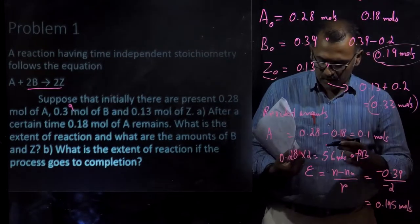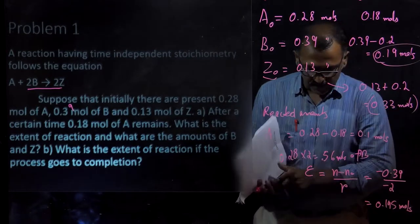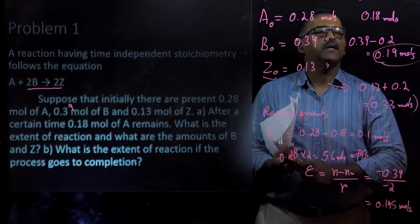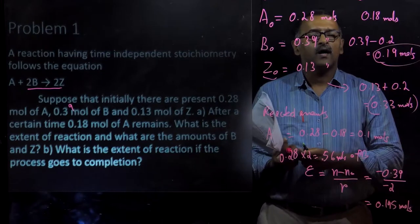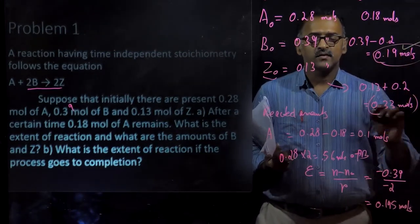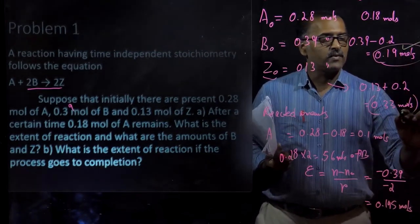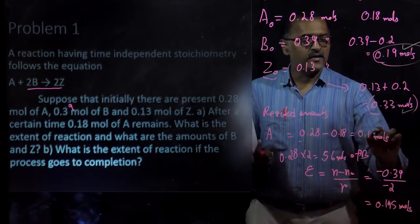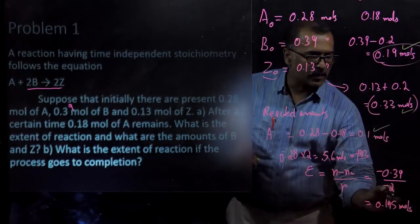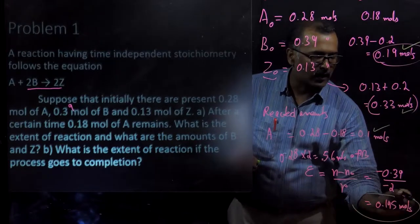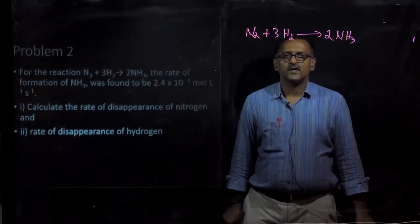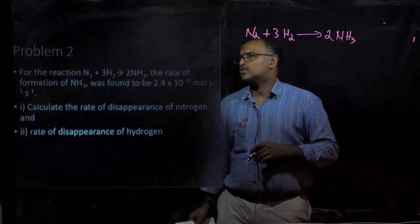So our answers are: B remaining = 0.19 moles, C = 0.33 moles, A remaining = 0.1 moles, and the extent of reaction = 0.195 moles. Now let us go to Problem 2.